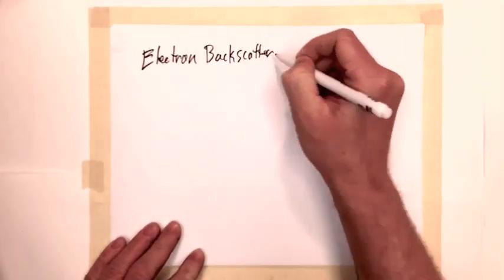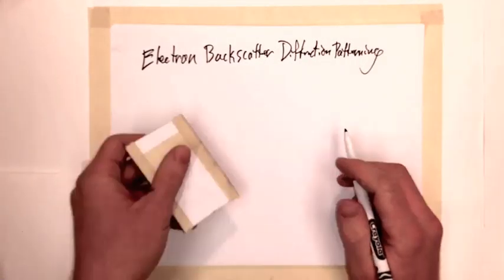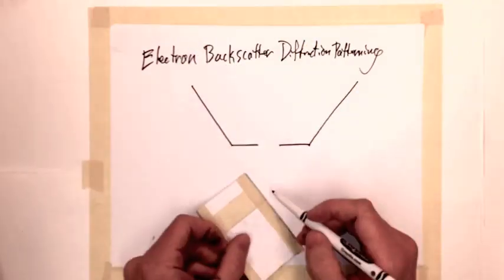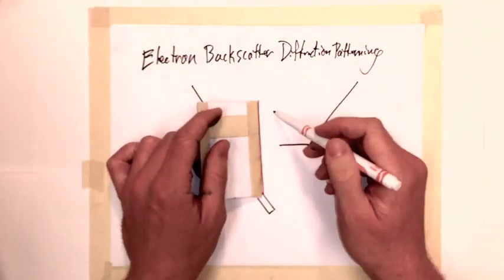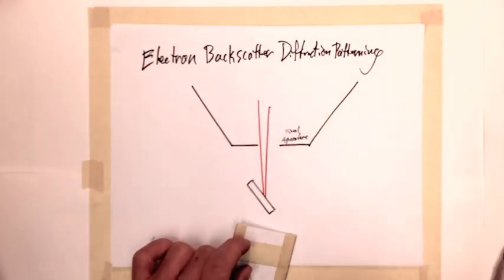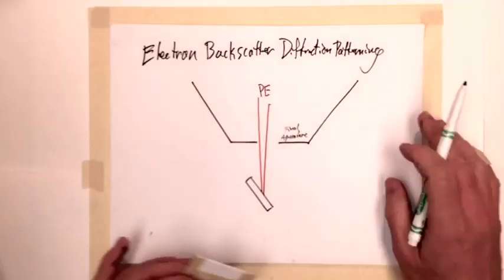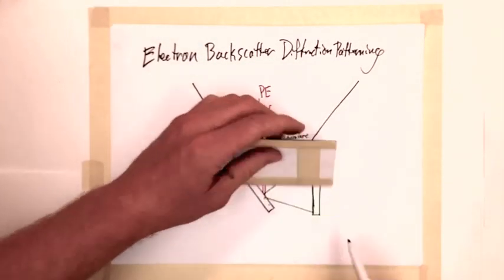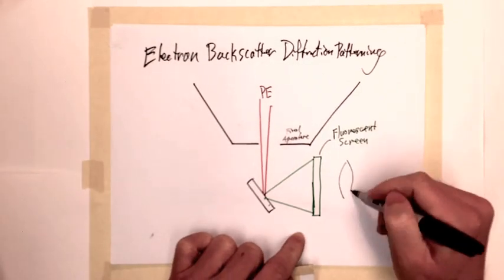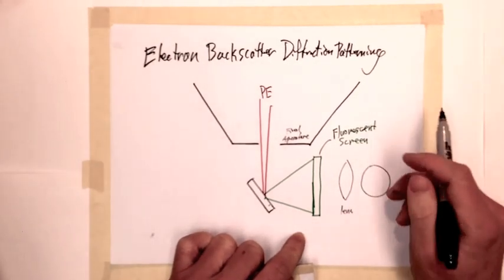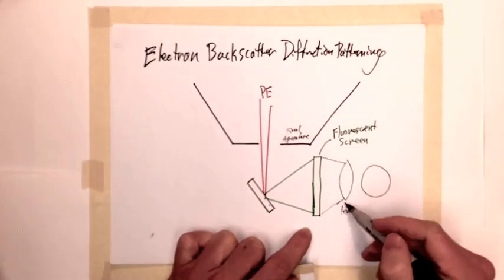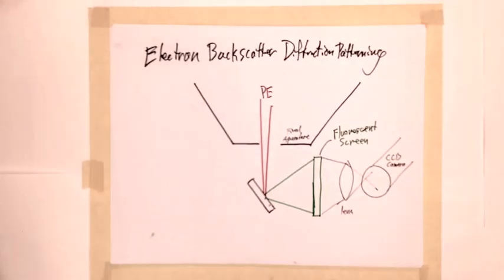The wave interaction of backscattered electrons with crystalline structures can be imaged as diffraction patterns in the SEM. The primary electron beam is held in place over a tilted sample while backscattered electrons are collected over a large solid angle. Diffraction pattern detectors use a fluorescent screen to detect electrons and produce an optical signal.